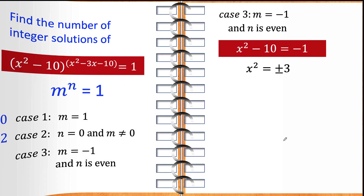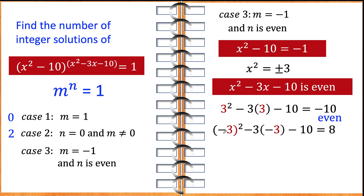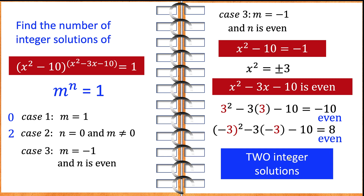We check the exponent x squared minus 3x minus 10 for each value. Substituting x equals 3: 3 squared minus 3 times 3 minus 10 equals 9 minus 9 minus 10, which equals negative 10 — an even number. So x equals positive 3 is confirmed. For x equals negative 3: negative 3 squared is positive 9, minus 3 times negative 3 is positive 9, giving 9 plus 9 minus 10, which equals positive 8 — also even. So there are two integer solutions for case number 3.